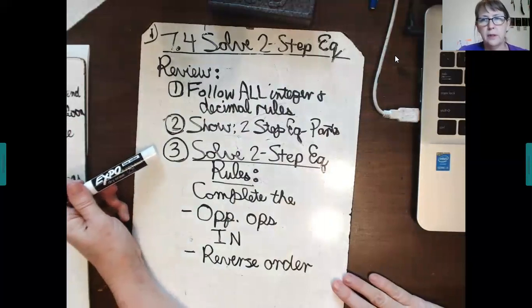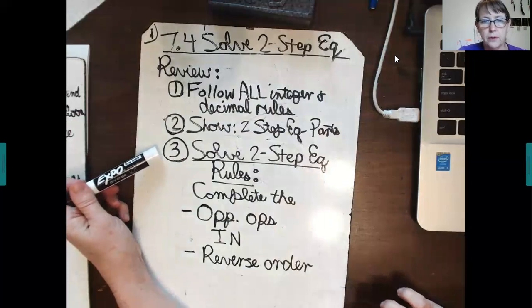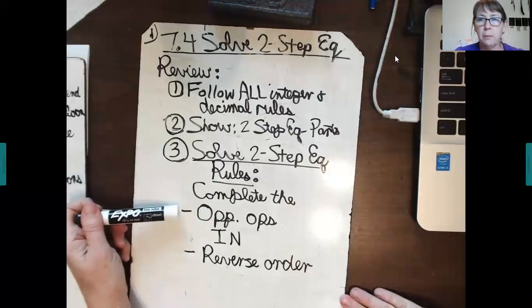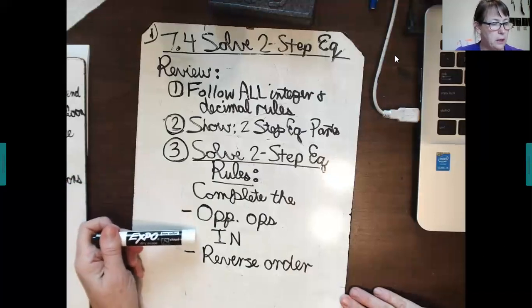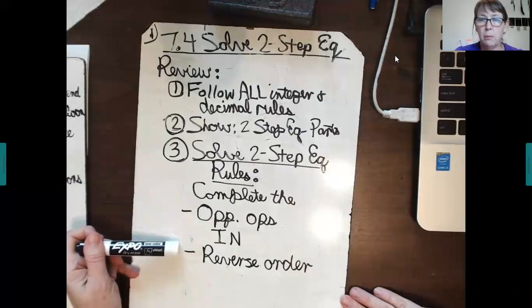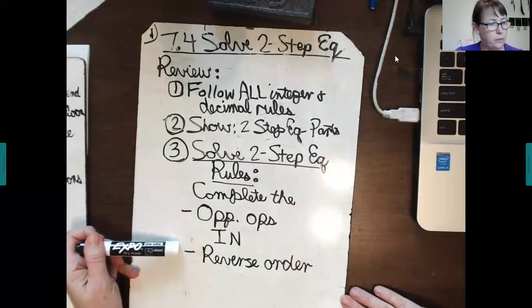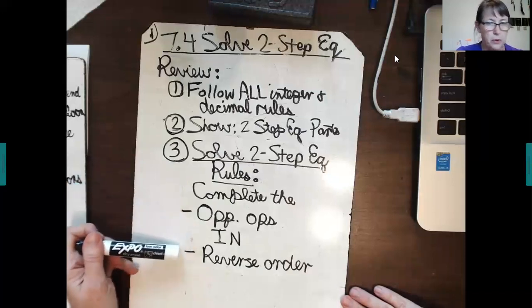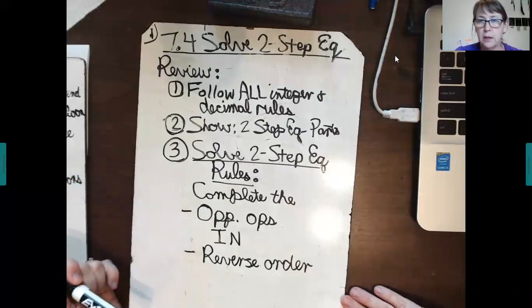And then I introduced in the last lesson, I will just say it up front right here. In order to solve a two-step equation successfully, here are the rules: Complete the opposite operations in reverse order. You should be writing this down in your notes. It will be very helpful for you. Complete the opposite operations in reverse order. And I will address that as we go through each of the problems in our lesson today.